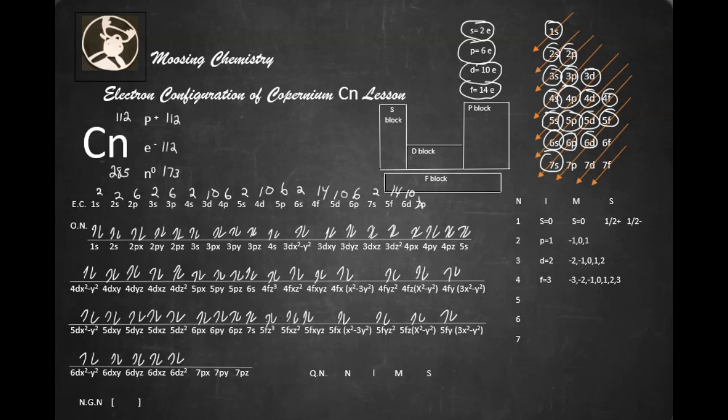Now, our noble gas notation, and this noble gas is radon, that ends in 6p6. We'll block all that out real quickly. Pretty snarly. So there's radon. And now we're going to put the shells in order.